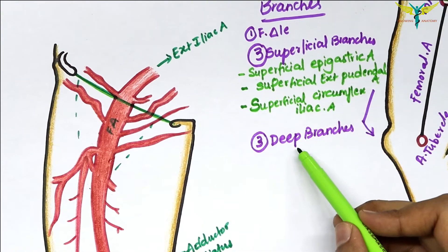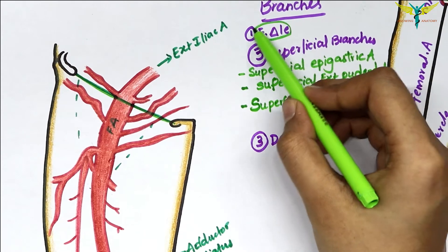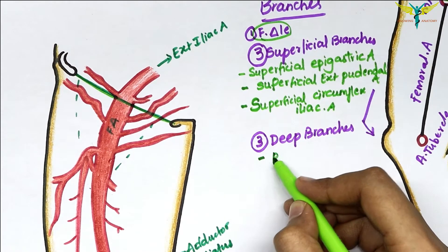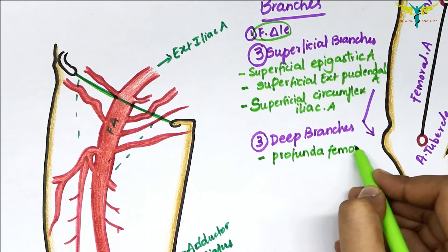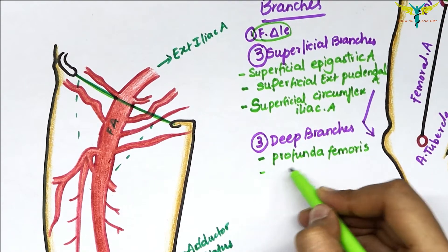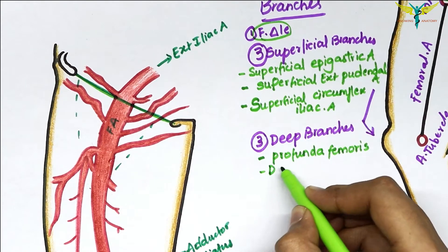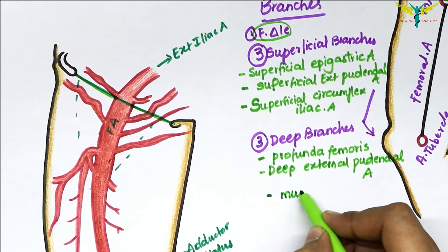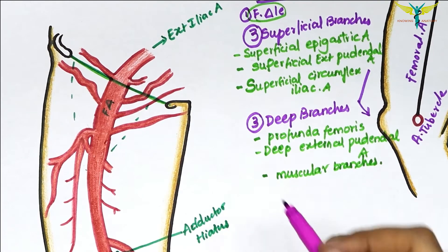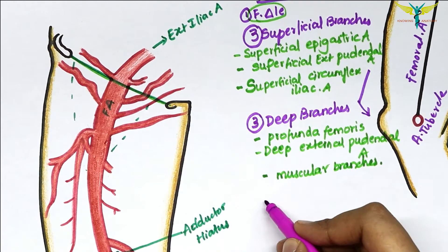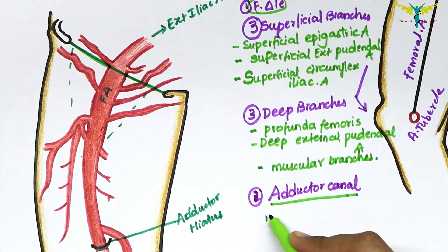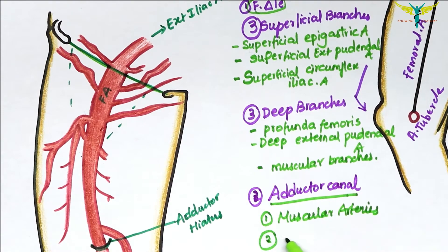The three deep branches in the femoral triangle are the profunda femoris artery, which is very important, the deep external pudendal artery, and the muscular branches. The branches of the femoral artery in the adductor canal are the muscular arteries and the descending genicular artery.